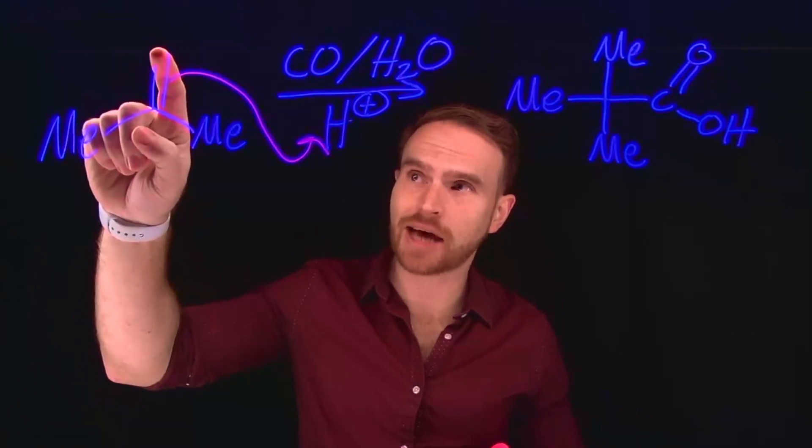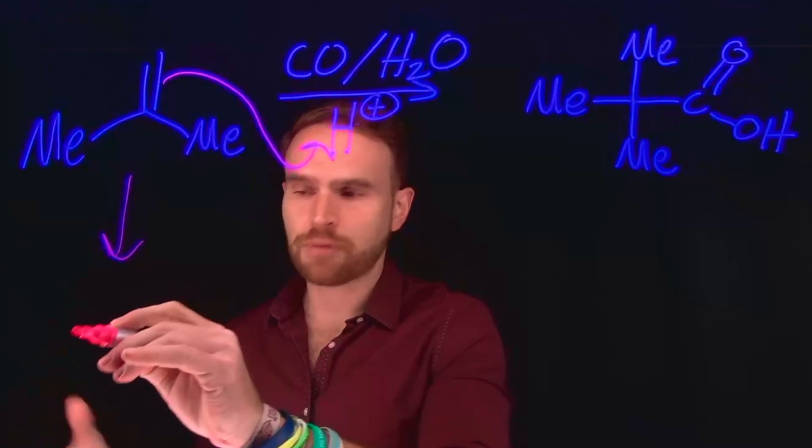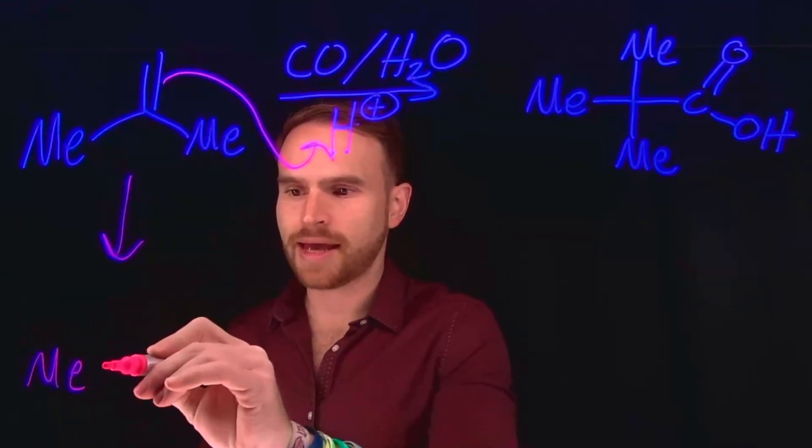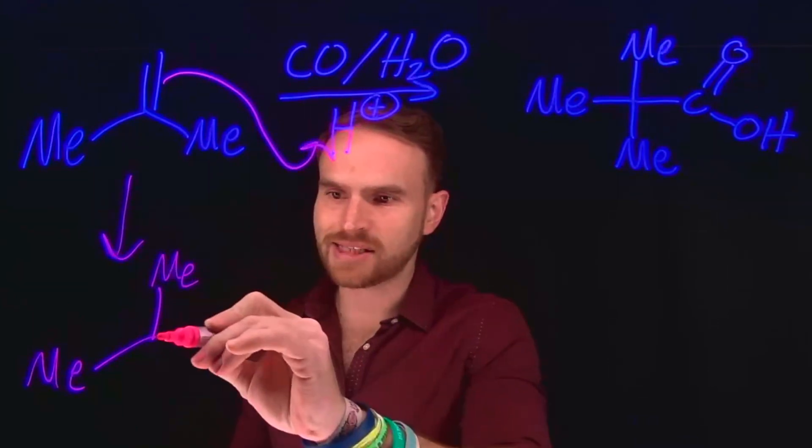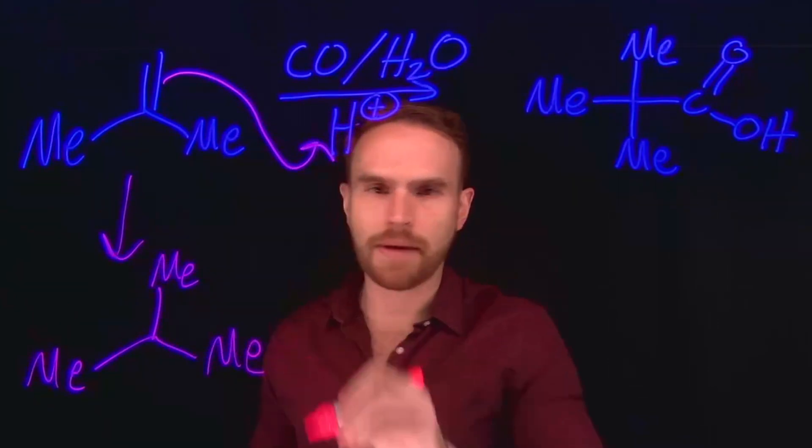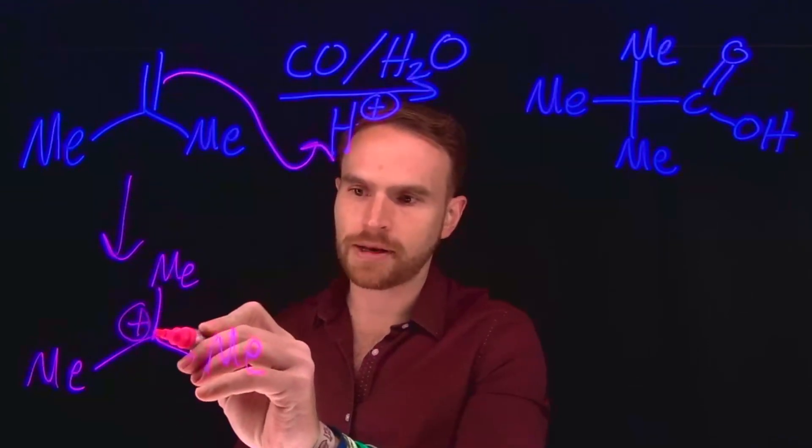So in this case, it would be this top carbon at the top of this alkene. Which means the product of this first step of protonating that alkene is going to end up with a carbocation at the carbon in the center between these three different methyl groups. So there's going to be a carbocation or an electrophilic carbon at this position.